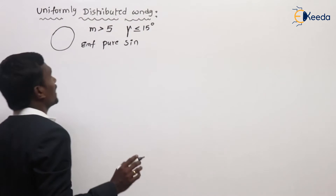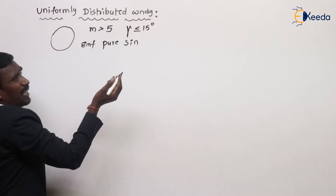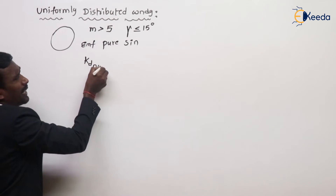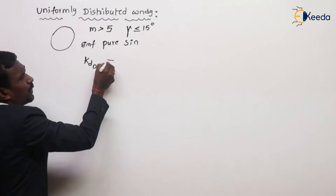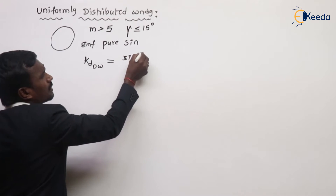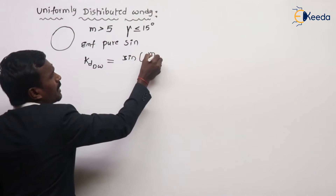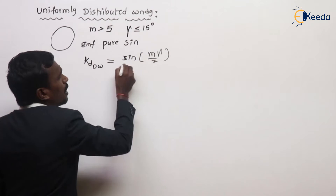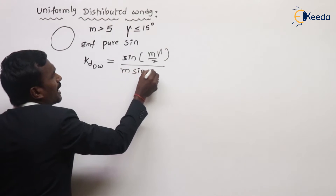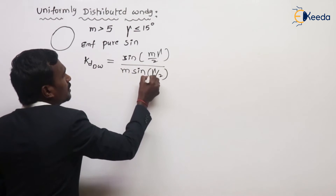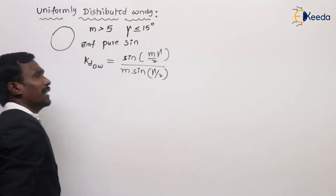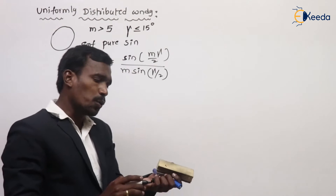Generally, KD for Distributed Winding is given by: sin(mγ/2) upon m·sin(γ/2). This is the standard formula for KD for Distributed Winding.